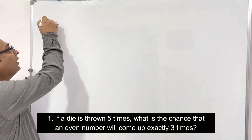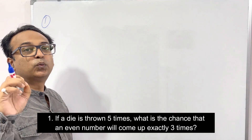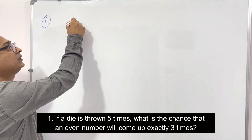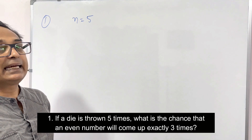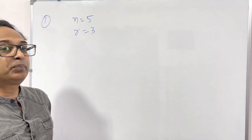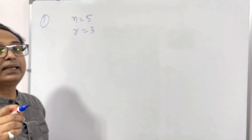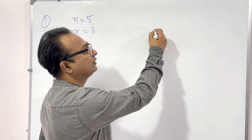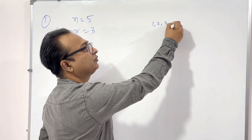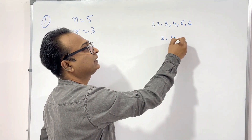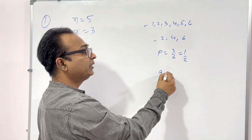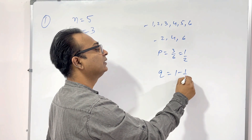Our first problem: if a die is thrown 5 times, what is the probability that an even number will come exactly 3 times? So N is 5 and R is 3. When you throw a die, the sample space is 1, 2, 3, 4, 5, 6, and even numbers are 2, 4, 6. So the probability of getting an even number is 3 by 6, that is 1 by 2. Therefore, the probability of non-occurrence is 1 minus 1 by 2, that is also half.